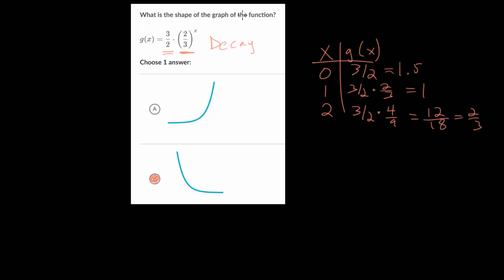And as the x value increases, this number, this function value is going to get smaller and smaller. And so if you really want, you can plot these points by hand. But you're going to get a graph that decreases over time in this exponential decay fashion.